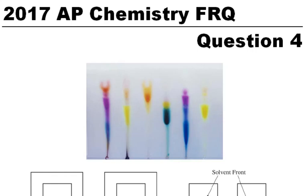We're going to look at the 2017 AP Chemistry FRQ question number four. This is a four-point question, and it has to do with paper chromatography.